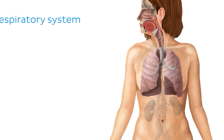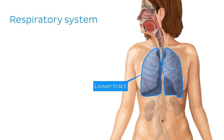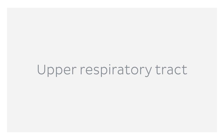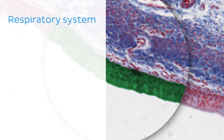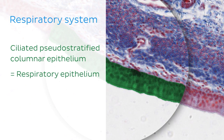The respiratory system can be divided into the upper, middle, and lower respiratory tracts. To begin with, let's look at the organs that make up the upper respiratory tract, most of which — except the parts of the pharynx that come in contact with the food bolus — are lined with ciliated pseudostratified columnar epithelium, also known as respiratory epithelium.